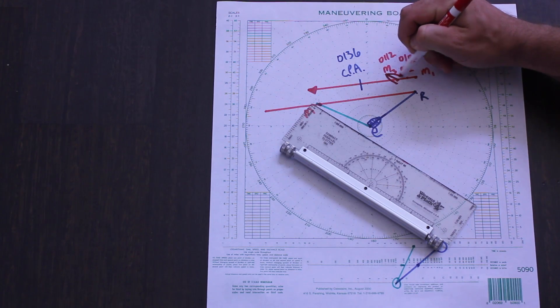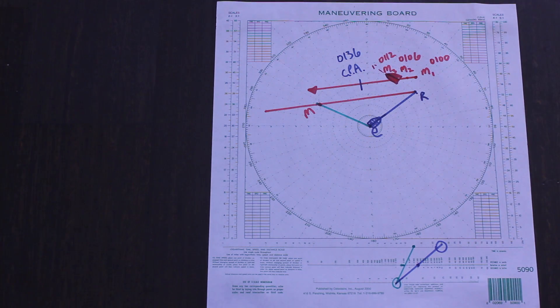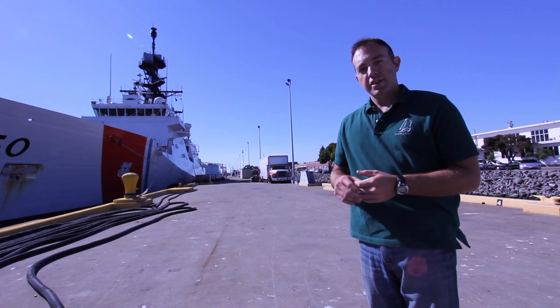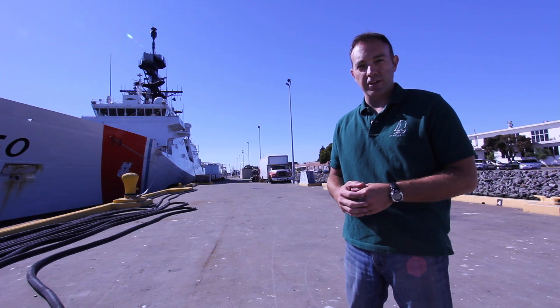Always remember the line of relative motion is the line the contact will continue to travel down if neither ship changes its vector, regardless of the true courses and speeds. So now that we've done a couple academic examples, let's get to a real example and see how you would actually do this on the bridge of a cutter.